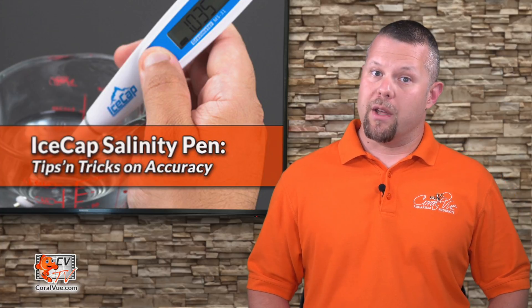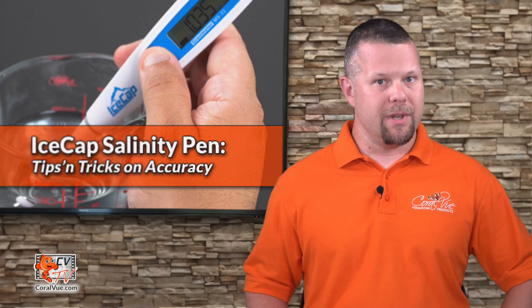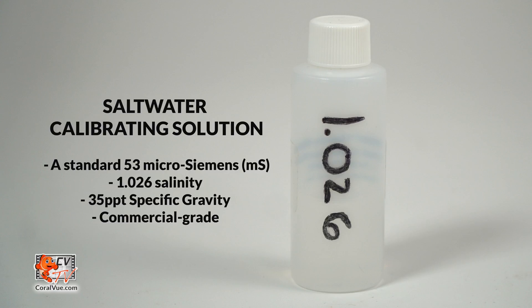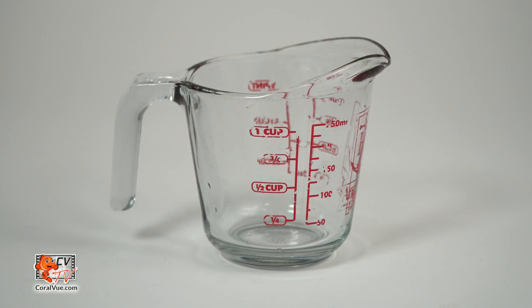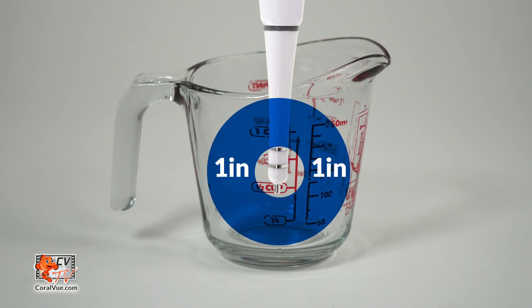In order to properly calibrate the pen, there's a few things that we need: a standard 53 microsiemens, 1.026 salinity, and 35 ppt specific gravity commercial grade saltwater calibration solution, and a large container to fully submerge the tip of the pen while at the same time maintaining a required one inch clearance all the way around the tip.